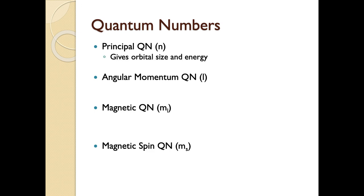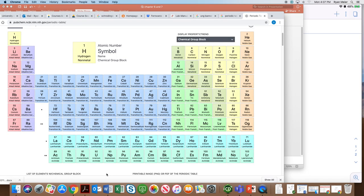For our principal quantum number n, it gives us the orbital size and energy — basically the approximate size and energy of the orbital the electron is in. Numerically, n starts at 1 and goes up: 1, 2, 3, et cetera. We can actually relate the n quantum number to the periodic table — if we zoom out to the periodic table, the rows on the periodic table correspond to the n value.